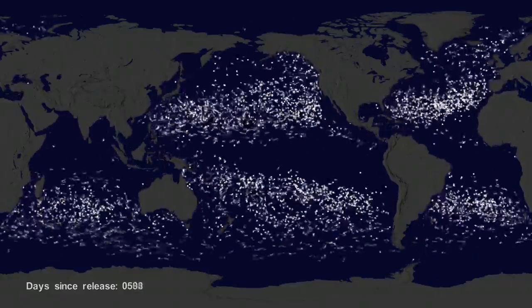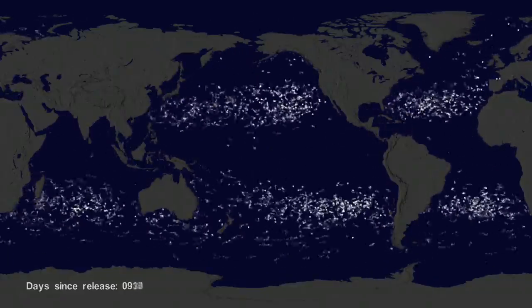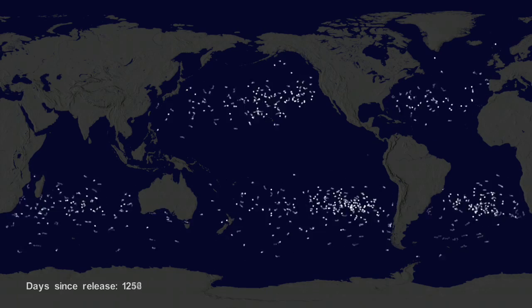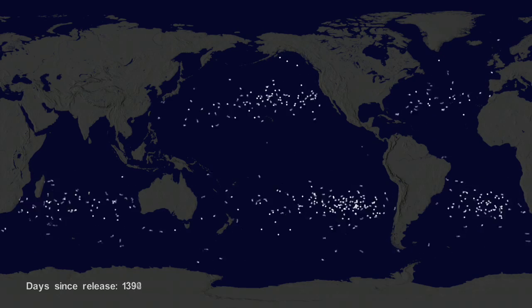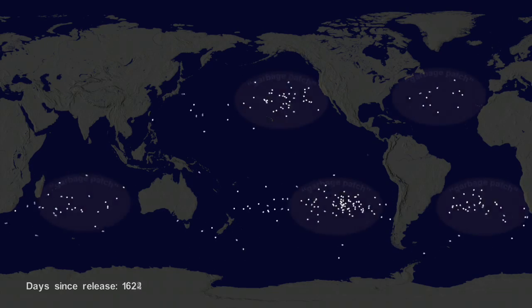The number of buoys decreases because some buoys don't last as long as others. The buoys migrate to five known gyres, also called ocean garbage patches.